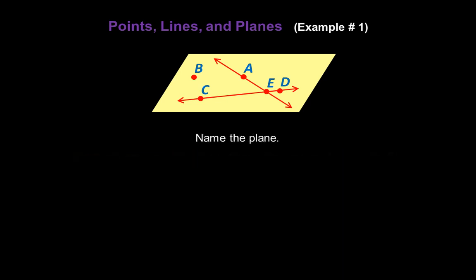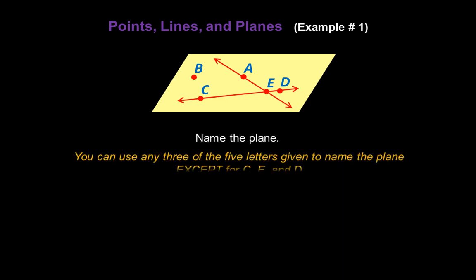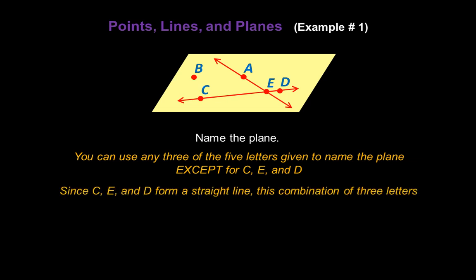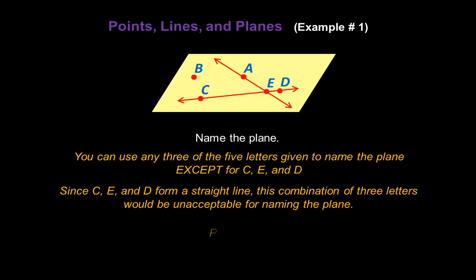Now let's name the plane. You can use any three of the five letters given to name the plane, except C, E, and D. Remember, since C, E, and D form a straight line, this combination of letters would be unacceptable for naming the plane. So let's go ahead and call this plane ACD.